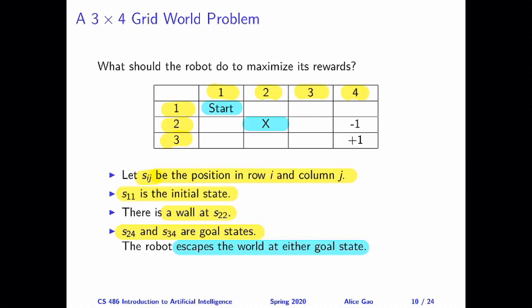The reward at S24 is minus 1, and the reward at S34 is plus 1. These are the only two goal states in the entire world. This world is kind of not very interesting, and the robot is exploring a lot. Ideally, it's trying to get to state S34 and avoiding state S24.